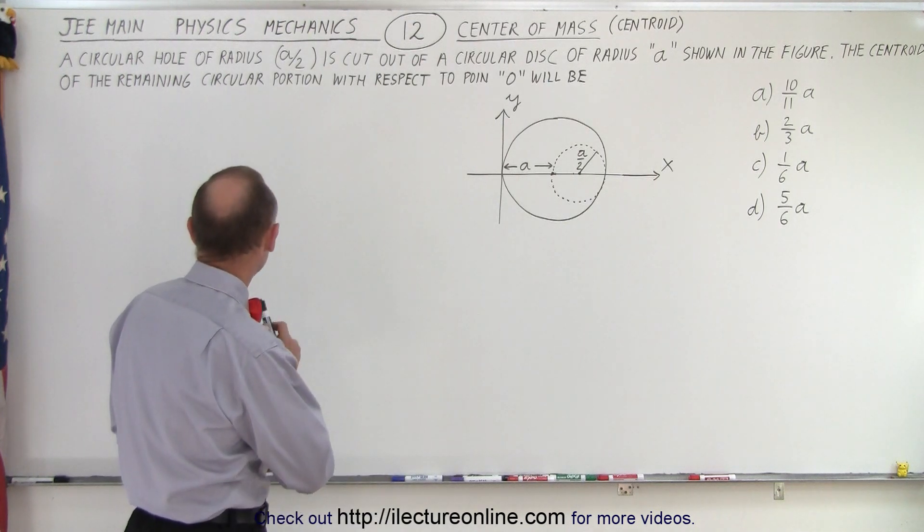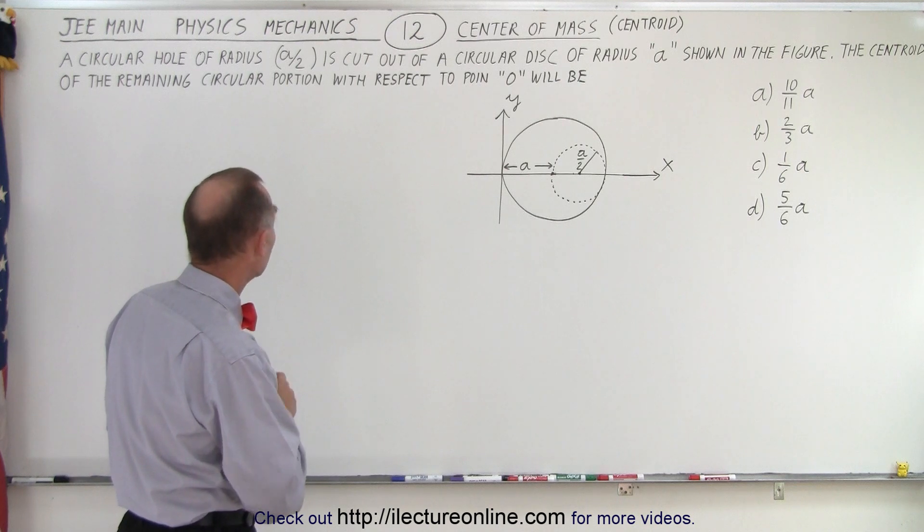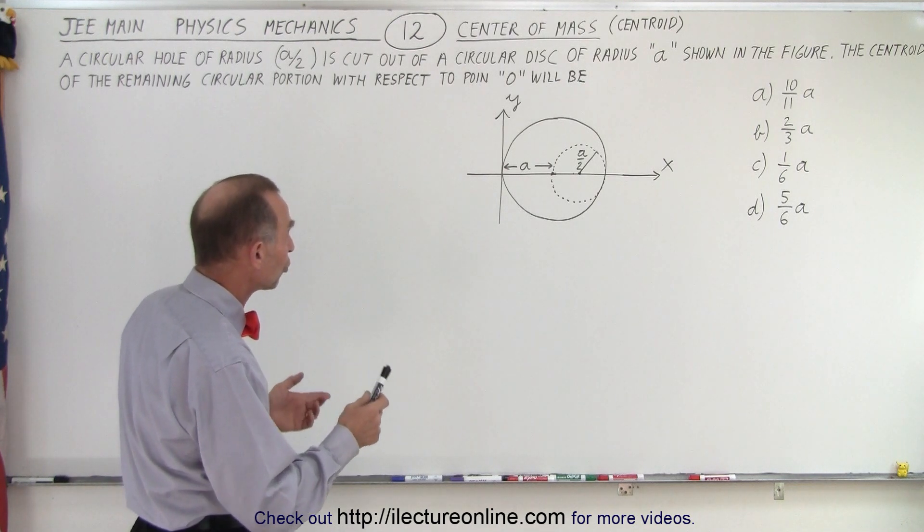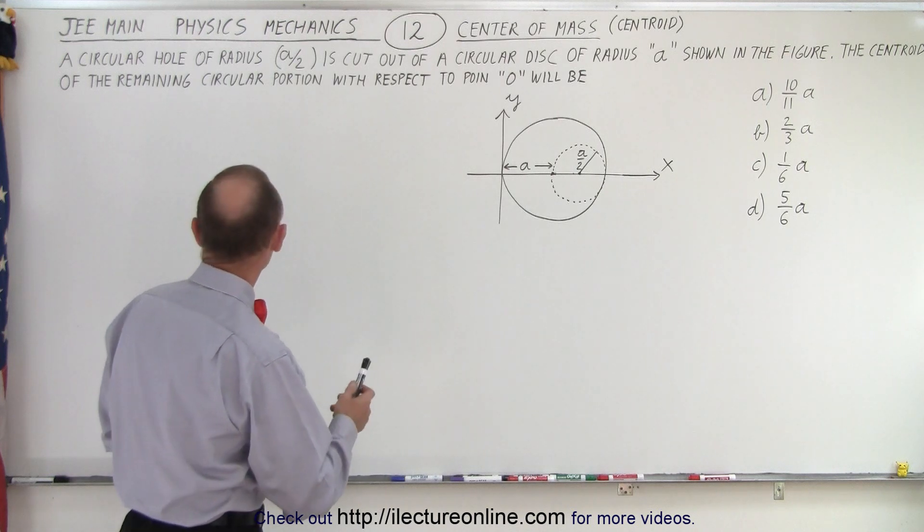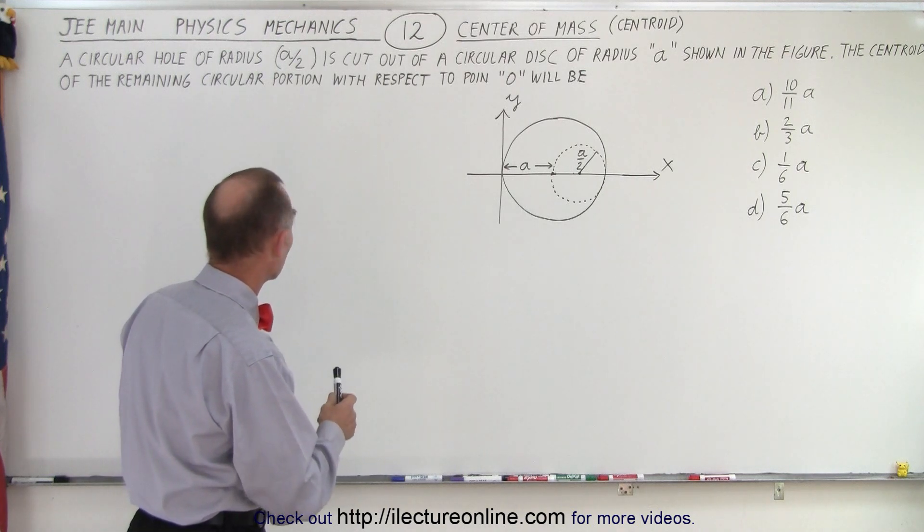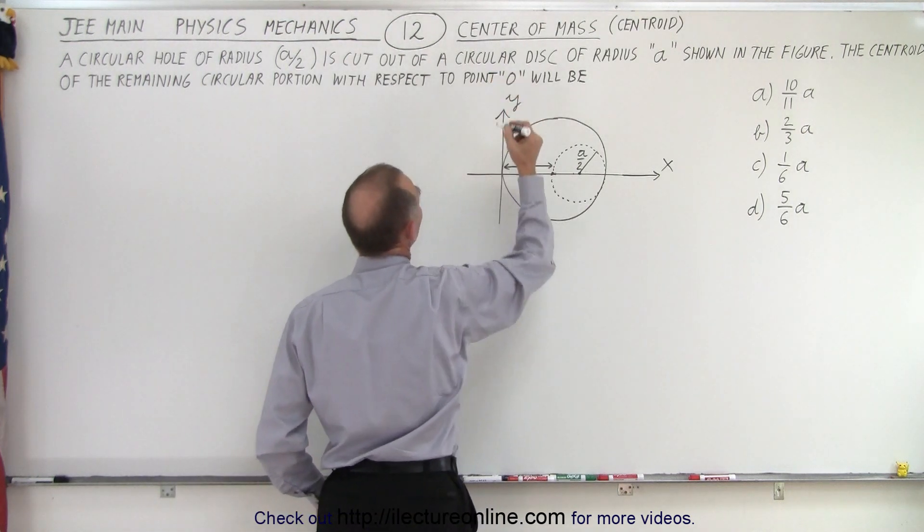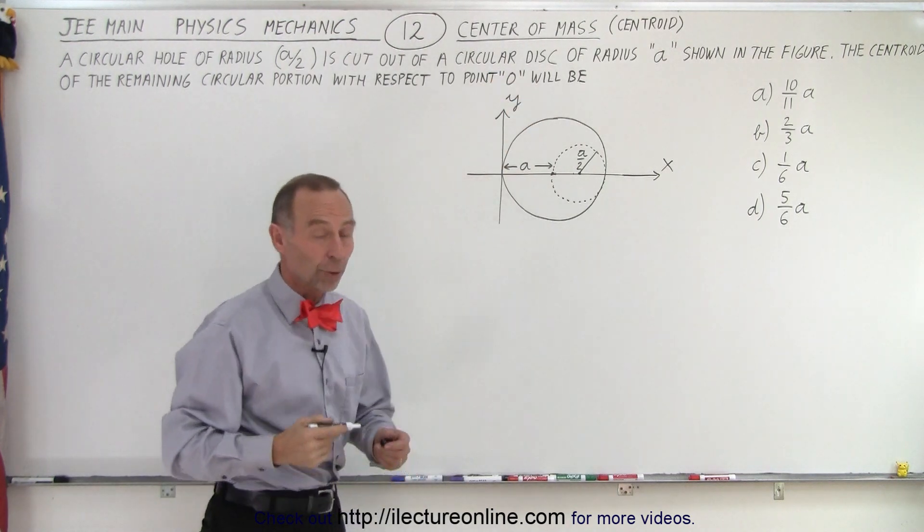It says here that a circular hole of radius a over 2 is cut out of a circular disk of radius a shown in the figure. The centroid of the remaining circular portion with respect to point O will be, and they give us four possible answers.